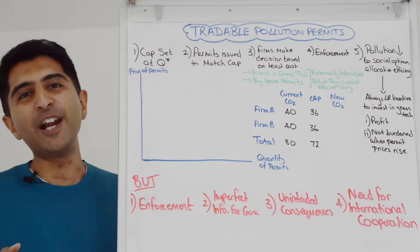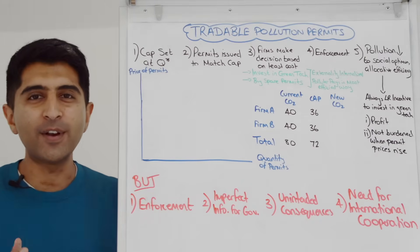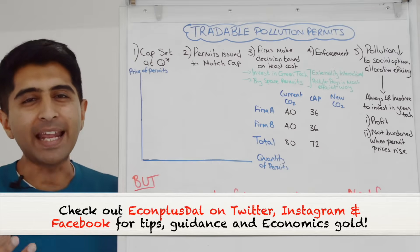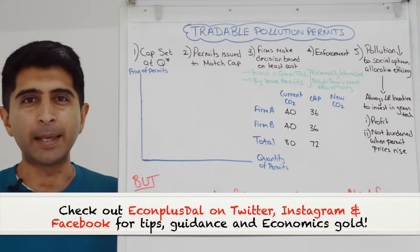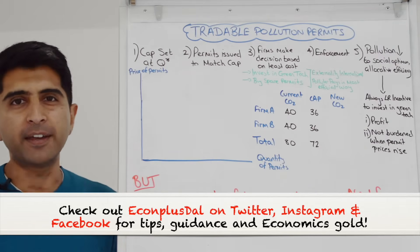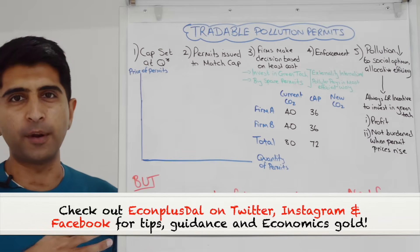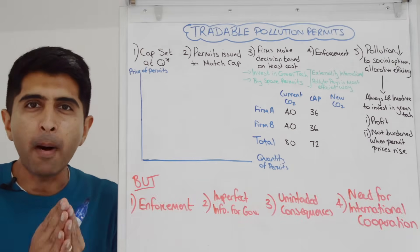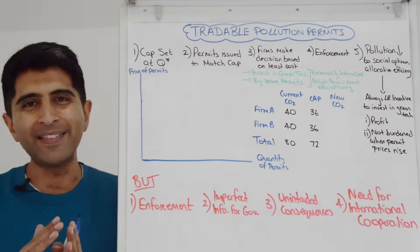Tradable pollution permits, also known as cap and trade, is a very innovative policy aimed at battling pollution-based market failure. It is innovative because there are elements of regulation in this policy, but really it's much more of a market-friendly approach to bringing down pollution.